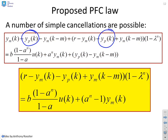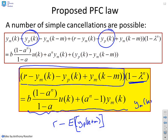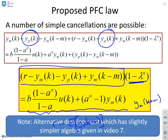So what you find is you get this term here: r minus ym(k) minus yp(k) plus ym(k-m). And what you'll notice is that the term in there that's effectively equivalent to r minus the expected value of yp(k+m). That in essence is what is in that box, and that's multiplied by 1 minus lambda to the n. And then on the right hand side you've just got your model prediction. You'll see that this bit here is just ym(k+m). Now there is an alternative development which is slightly simpler algebra, which we'll give in video 7, but we don't want to do that until obviously we've gone through the normal derivation.